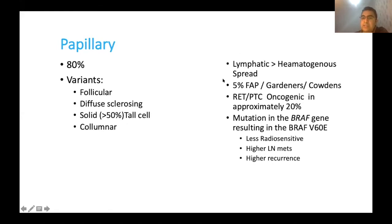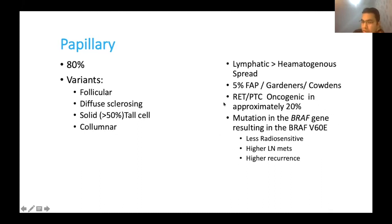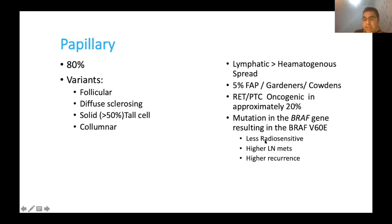Papillary thyroid cancer tends to spread via lymphatics and can be associated with genetic syndromes. The BRAF mutation is an important up-and-coming molecular aspect of thyroid disease. I suspect in future we'll do far fewer diagnostic hemithyroidectomies, relying instead on molecular and genetic workup to risk-stratify patients.